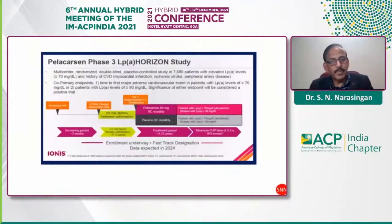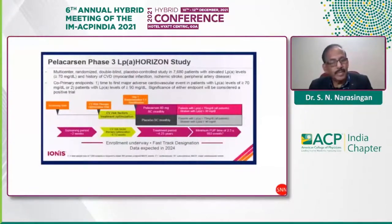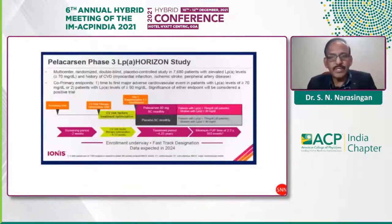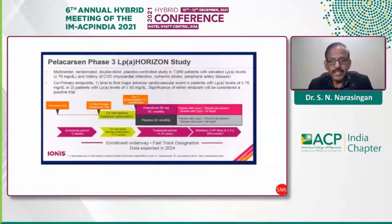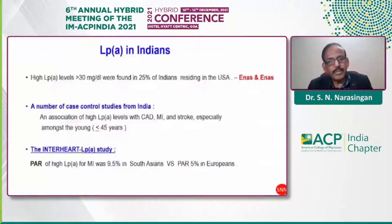The Pelacarsen Lipoprotein(a) HORIZON study is an injection of 80 mg given every month with a long-term follow-up of 4.25 years, conducted in patients with established cardiovascular disease. Lp(a) levels of 70 mg and 90 mg are taken as thresholds for the outcome analysis. Results are expected by 2024.